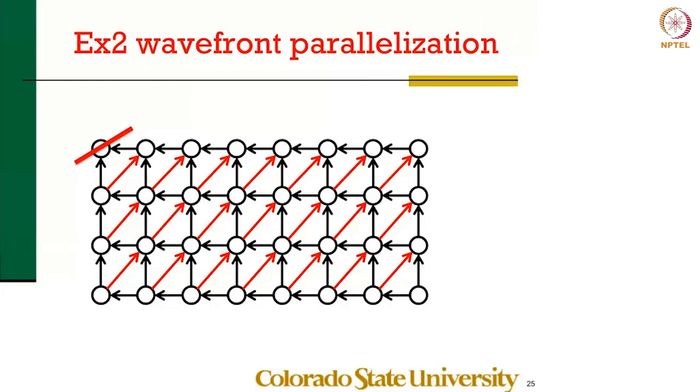Yeah, 1,0. The origin is 0,0. Top left is 0,0 in the convention that we have. So 1,0 and 0,2. Yes, there are two sinks. If there are two sinks, then there is parallelism. Both of them can be executed in parallel. Very nice. What else? After you remove those.